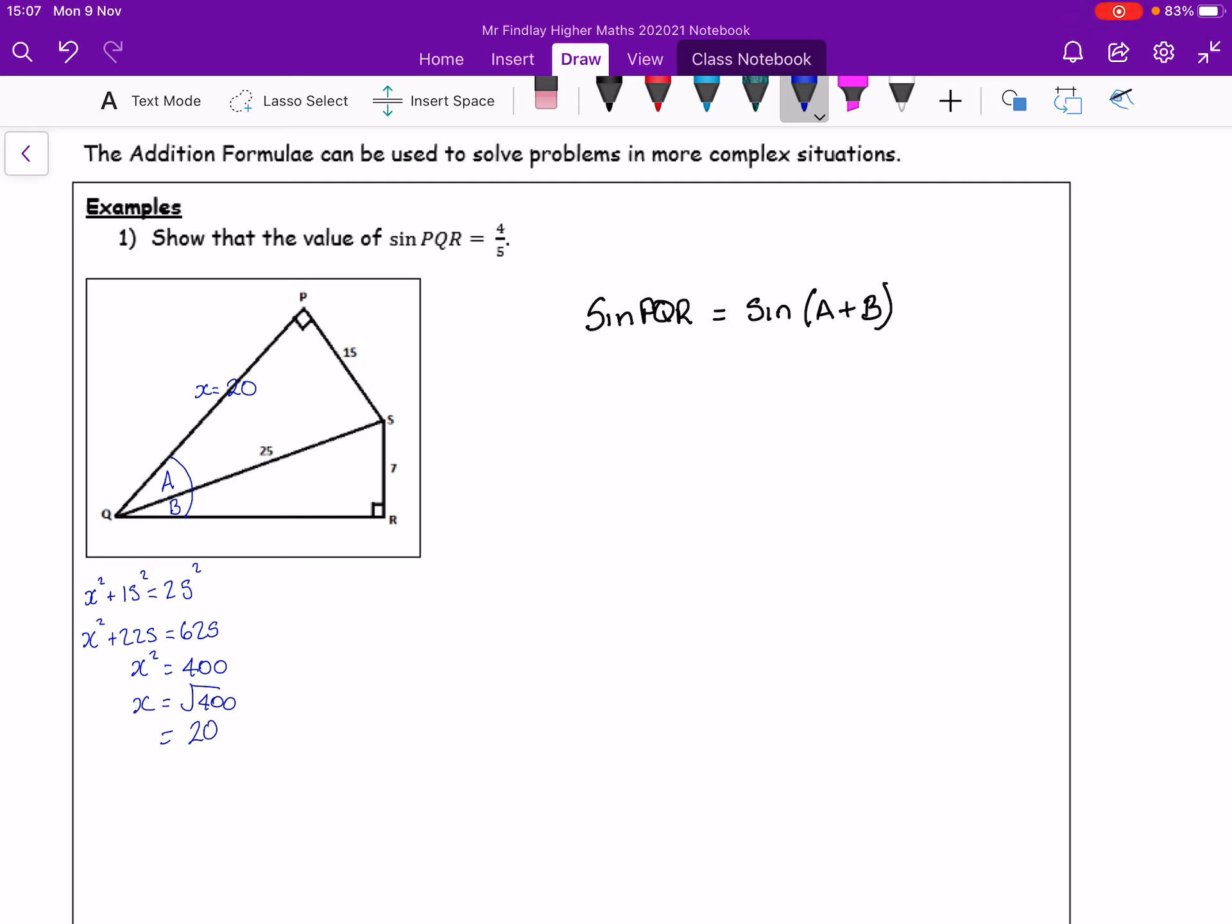And the second triangle with B angle, 25 is the hypotenuse, we've got 7. So we need our y value. So again, through Pythagoras, y squared plus 7 squared is equal to 25 squared. 49, 625, y squared is 576. Root of 576 is 24.